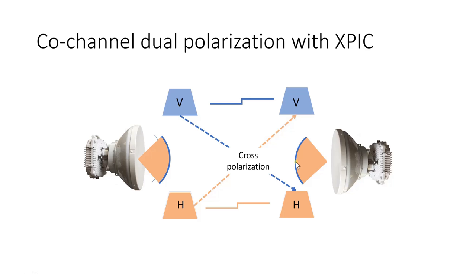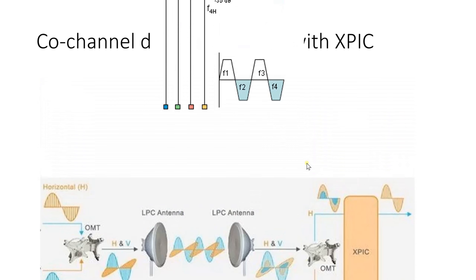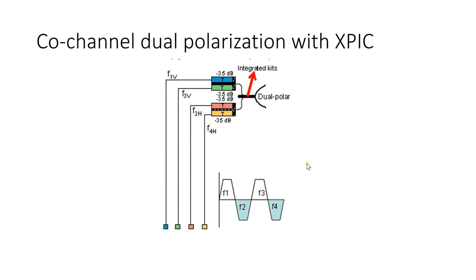At the receiving antenna, you can see both the direct signal and the cross-polarized signals, both at equal strength. We need a technique to differentiate the cross-polarization from the actual signals. For that purpose, we use XPIC technology. In the receiving part, there is a circuit called XPIC — it acts like a filter, cancelling the cross-polarization and separating the horizontal and vertical bit streams for the receiver.